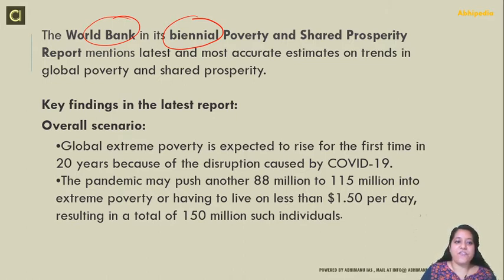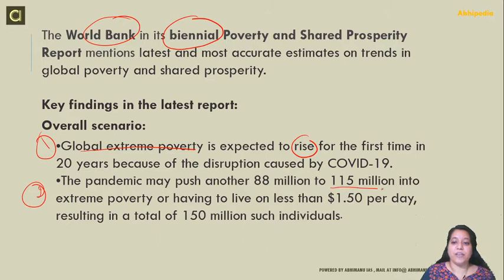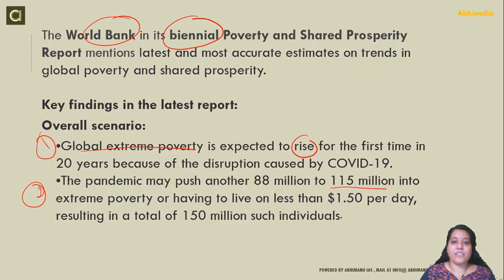The key findings: Global extreme poverty is expected to rise for the first time in 20 years because of the disruptions caused by COVID-19. Due to the pandemic, it would push another 88 million to 115 million people into extreme poverty, meaning they would have less than $1.50 per day to live on.